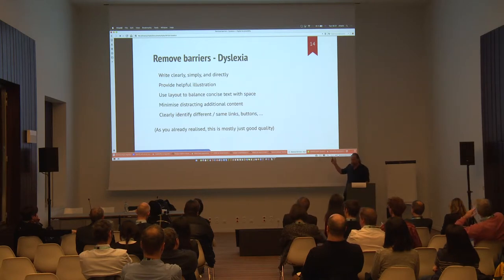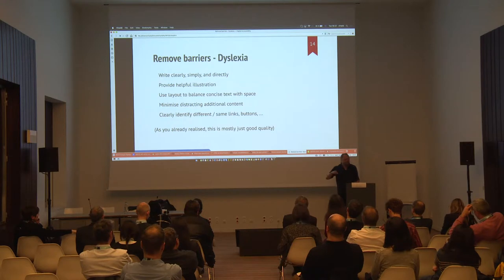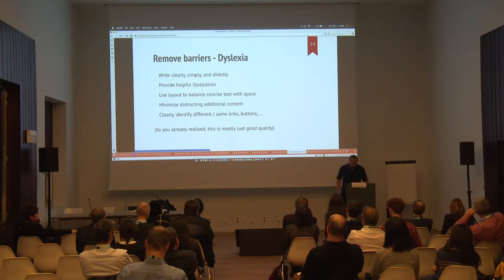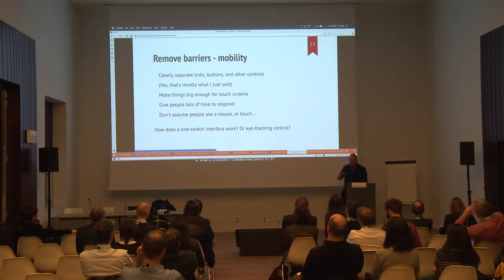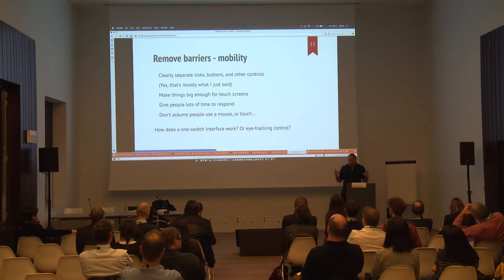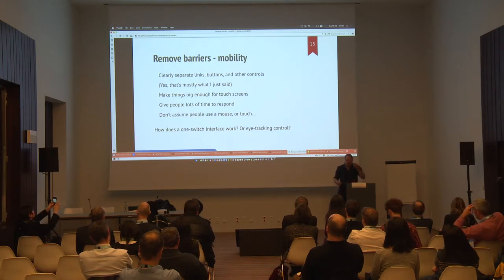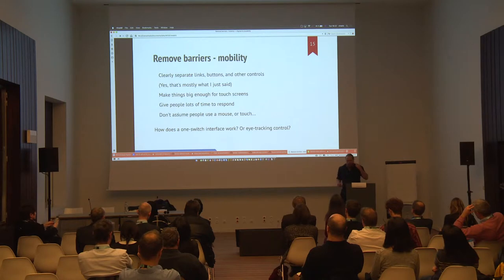And as you have already realised, because you're all smart people — this is just basically good quality. What sort of things do you need to think about for people who have mobility issues, who have control issues? Again, clearly separating stuff, so that people aren't trying to judge that fine gap between two tiny dots that they can barely see, because they're also usually wearing glasses but left them at home.